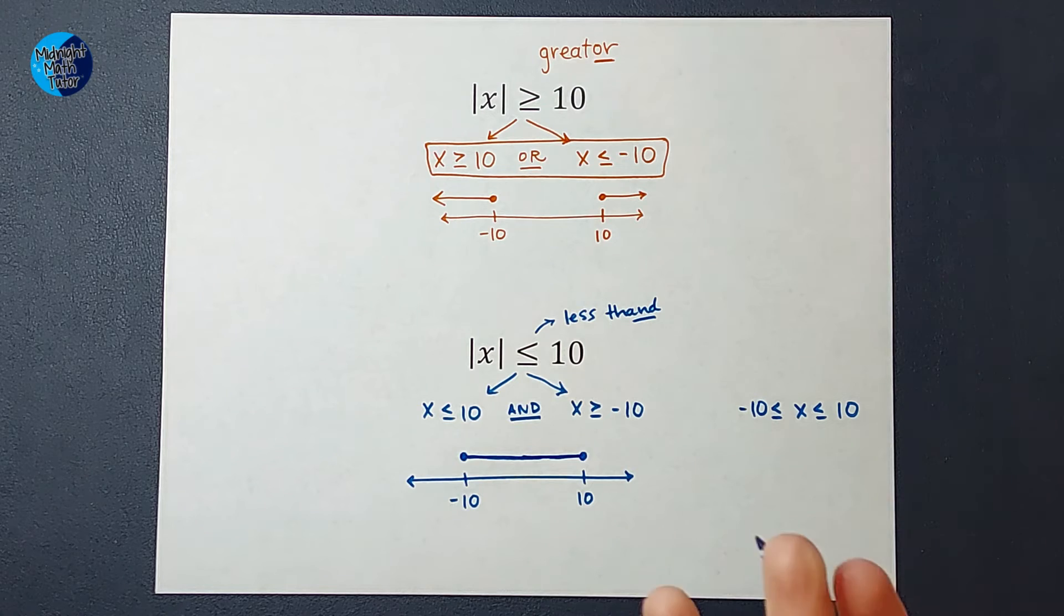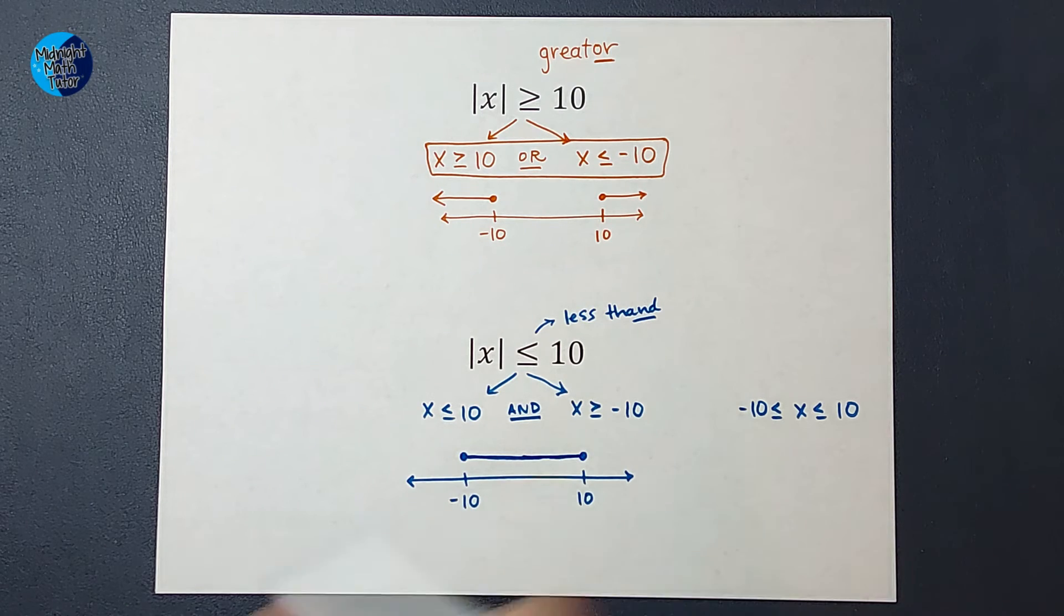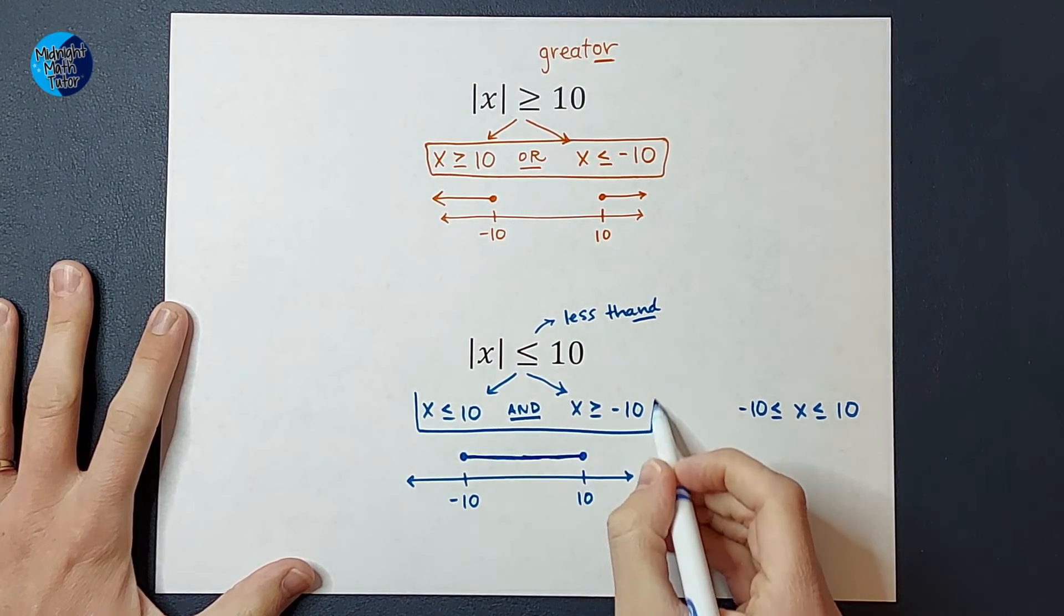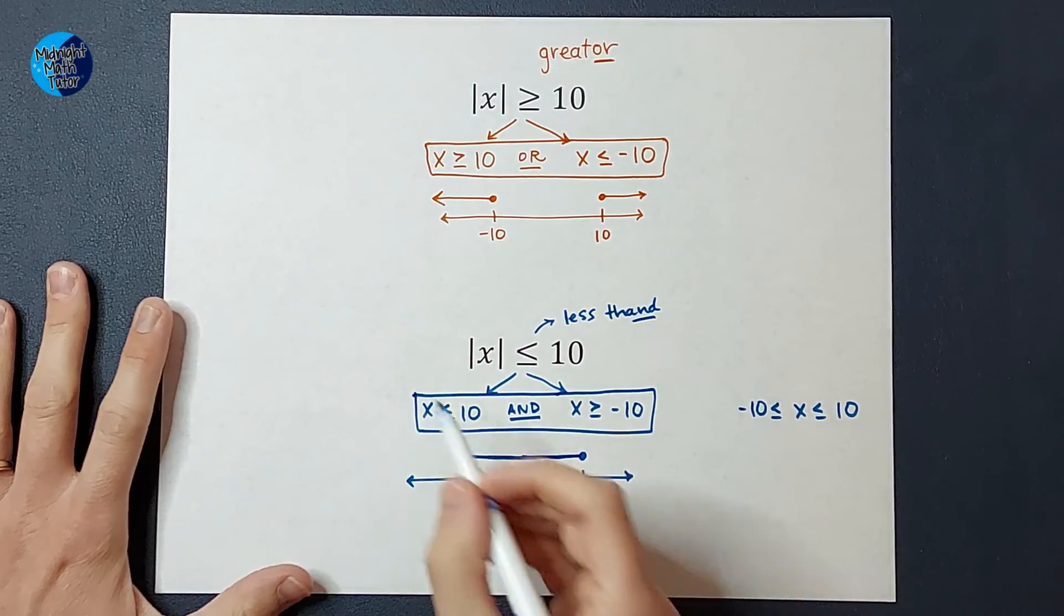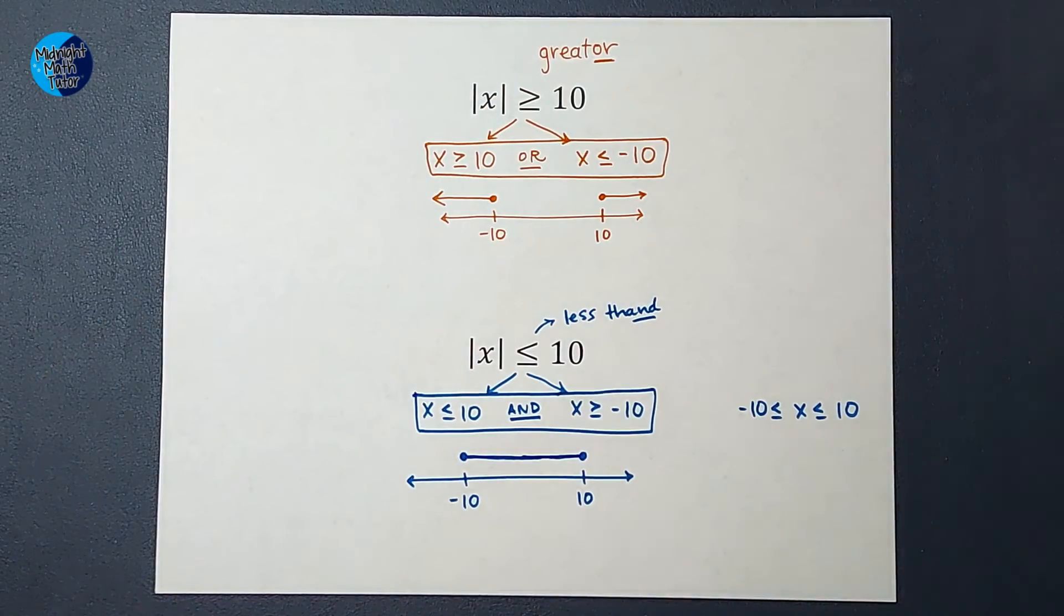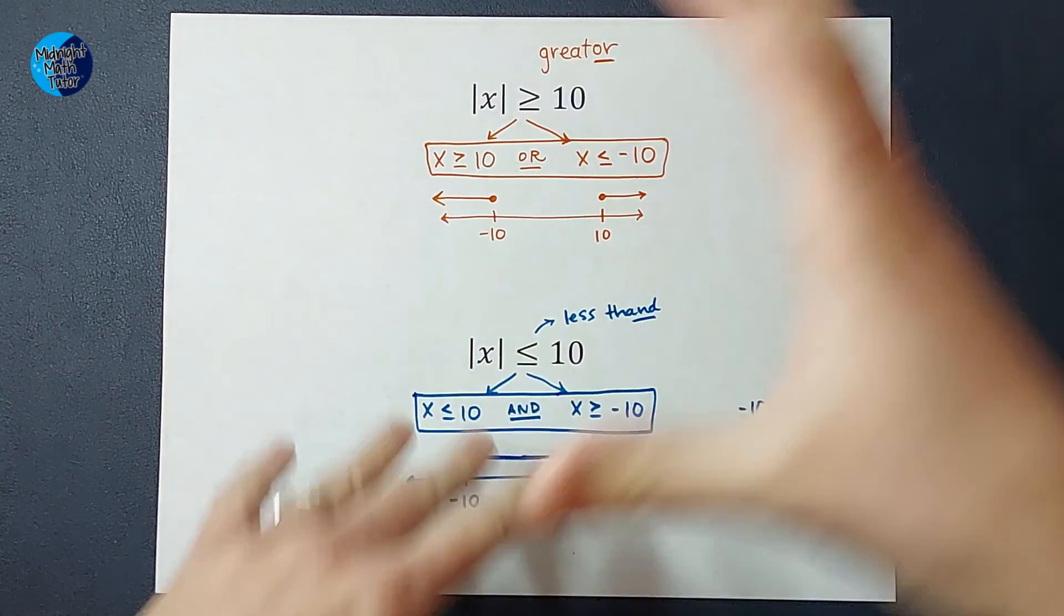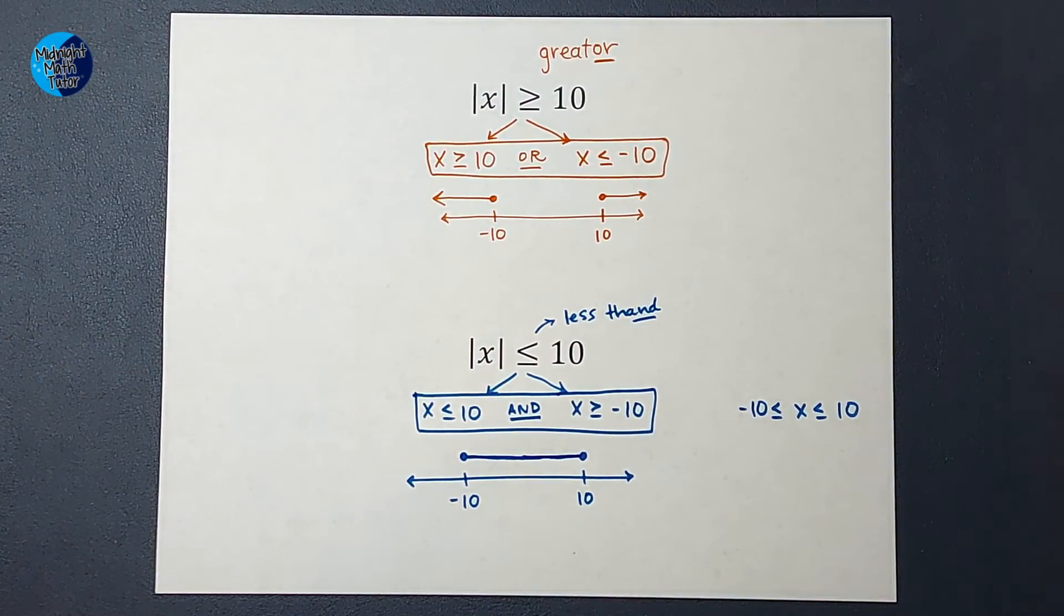So if I were to plug in zero, the absolute value of zero is zero, and zero is less than or equal to 10. So that is why we split it off into two, and why we can do the greater and less than. I hope that made sense. I'm going to link a whole playlist with lots of examples. Obviously, they're not always this simple. We have things being added and subtracted and all sorts of things, but the same principle applies. Thanks!